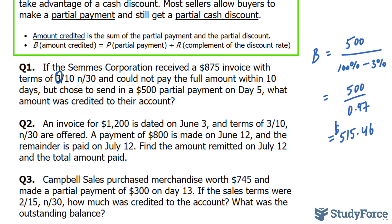In question number two, we're asked: an invoice for $1,200 is dated on June 3rd with terms of 3/10 and N/30. A payment of $800 is made on June 12th — notice that is before June 13th, the cutoff date — and the remainder is paid on July 12th. Find the amount remitted on July 12th and the total amount paid.